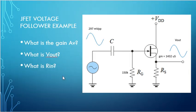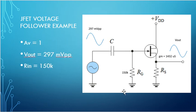Let's do a JFET voltage follower example. What is the gain AV? What is Vout? What is Rin? Our input voltage is 297 millivolts peak to peak. This JFET has a conductance of 1432 microsiemens. We have our gate resistor at 150K. Our gain is 1, it is a voltage follower. We're taking the output off of our source lead. Vout will equal Vin. We have 297 millivolts peak to peak as Vin, Vout will be 297 millivolts peak to peak. Rin will be whatever RG is, 150K.